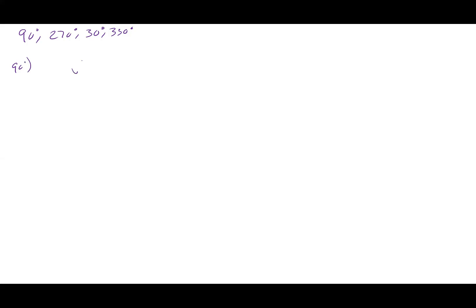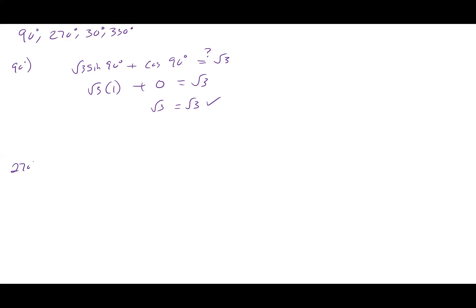Let's go with 90 first. I have root three times sine of 90 degrees plus cosine of 90 degrees — is that going to be equal to square root of three? At 90 degrees, cosine is zero and sine is one, so that becomes root three times one plus zero, which is root three. Therefore, 90 degrees checks out.